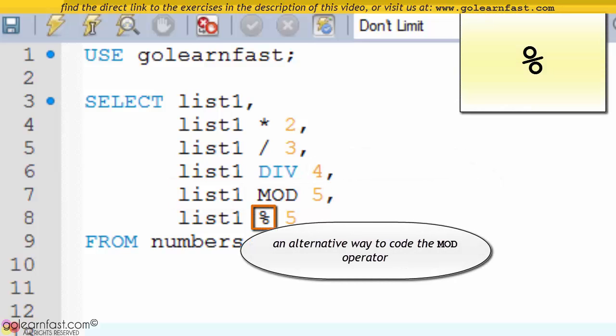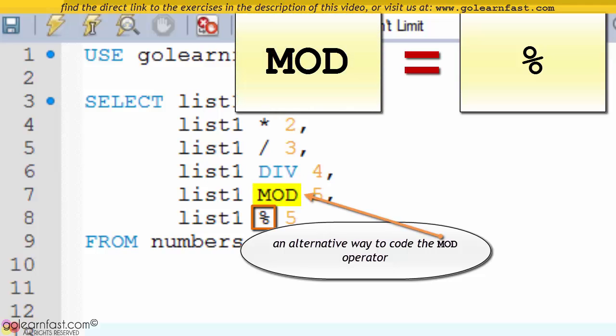Finally, the sixth column uses the percent sign which is an alternative way to code the modulo operator.